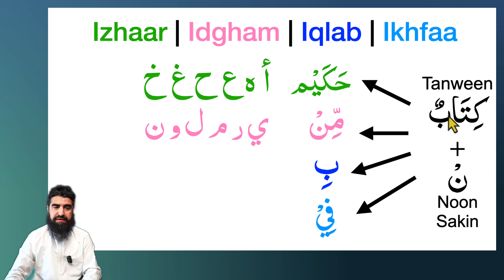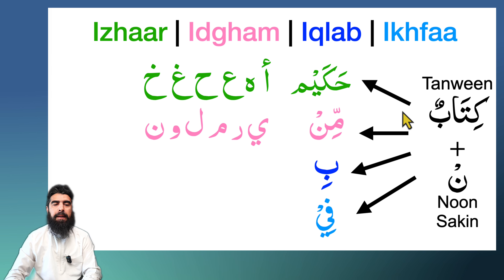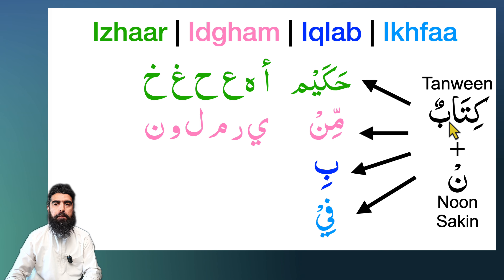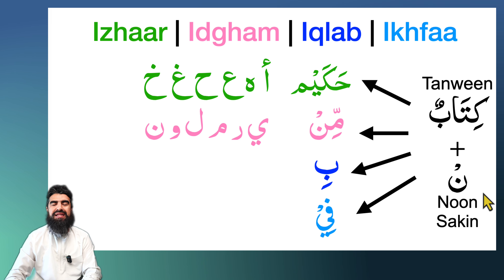If after tanween — which is a double vowel — or a noon sakin, if you have any of the green letters (the throat letters), then you have to pronounce it clearly. It's called إِظْهَار — you pronounce it clearly. For example: كِتَابٌ حَكِيمٌ, مِنْ حَكِيمٌ — there is no manipulation of the sound. If you get one of the pink letters (يَرْمَلُون letters: ي، ر، م، ل، و، ن), you pronounce it by joining together with a small shaddah on top — that is إِدْغَام.